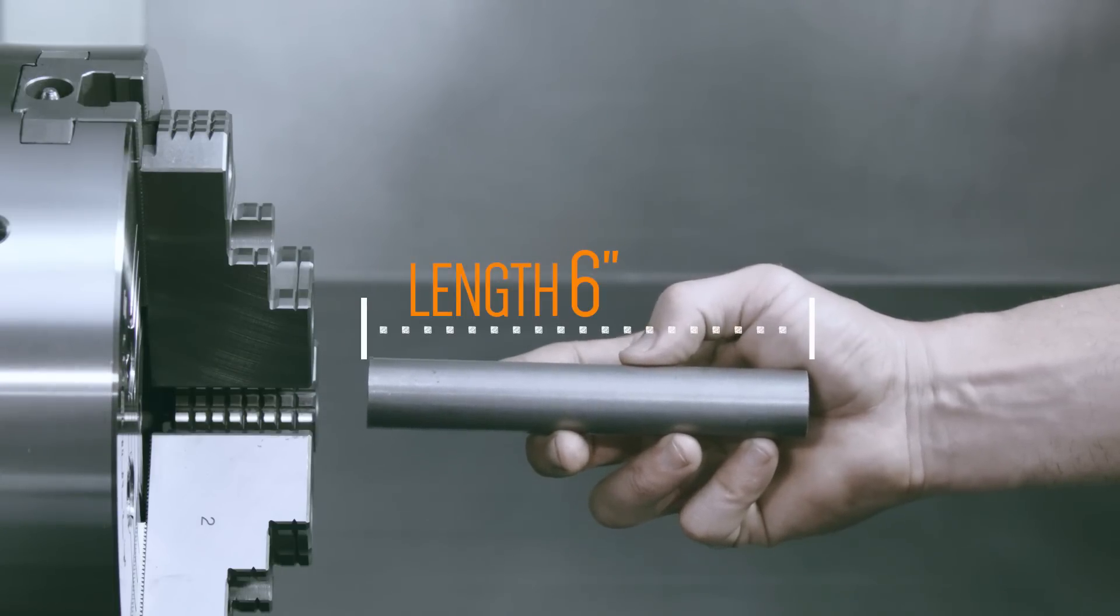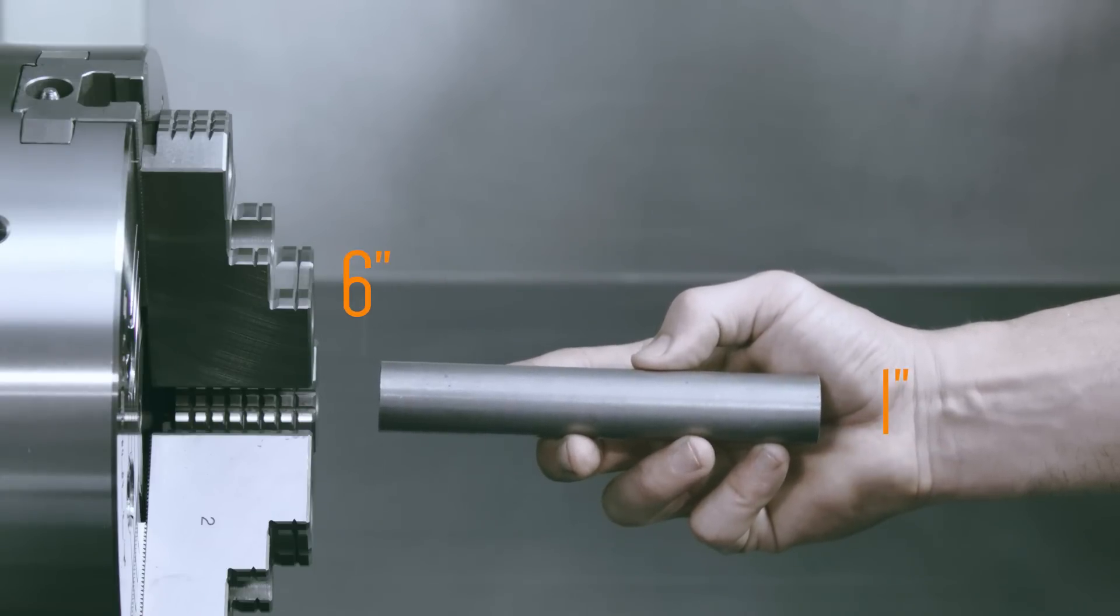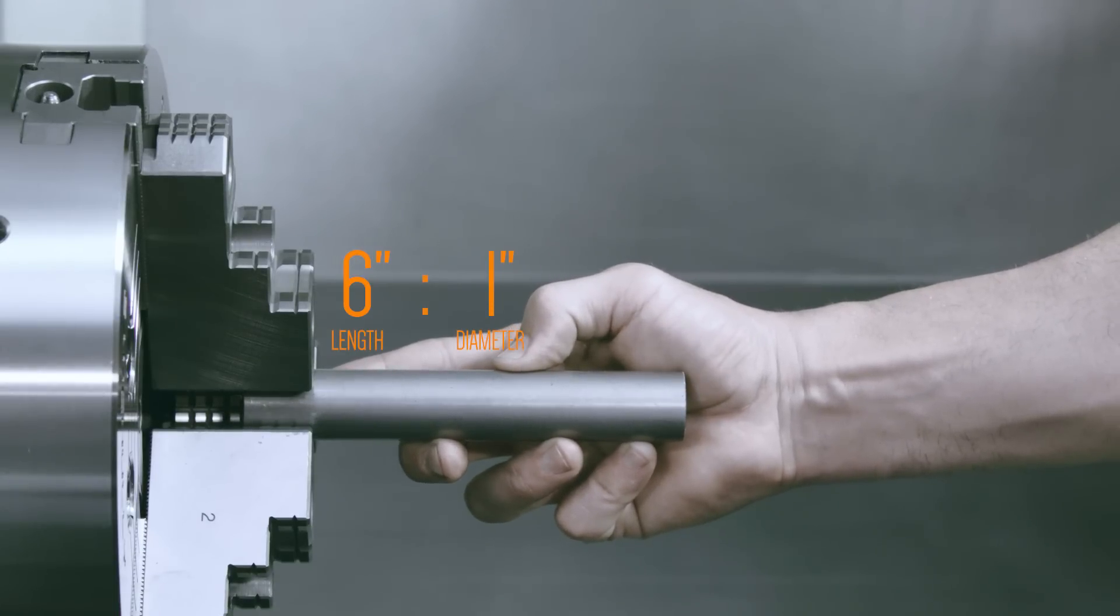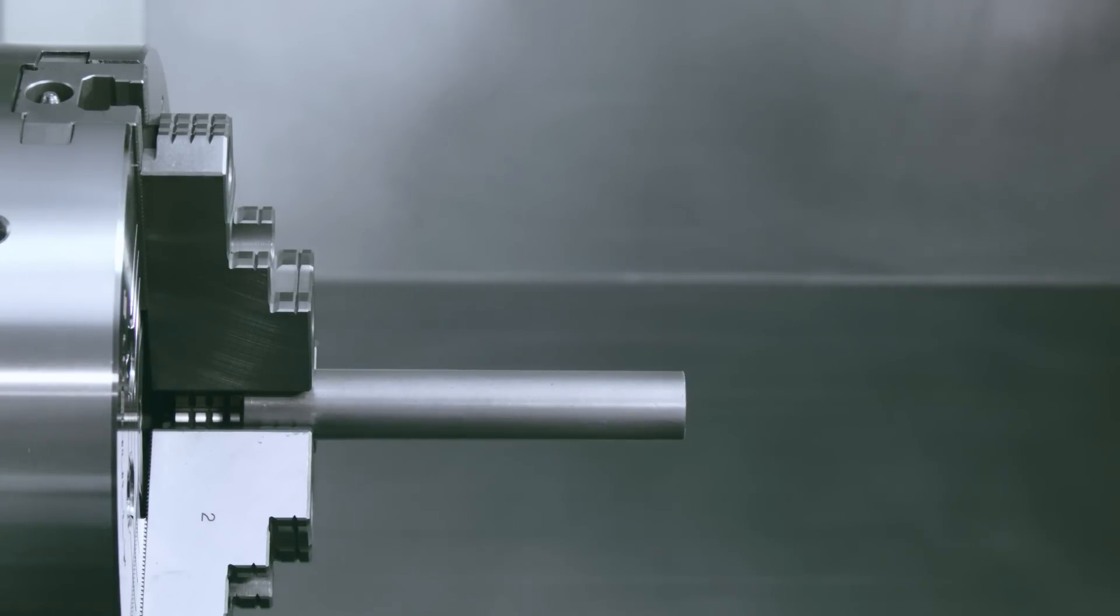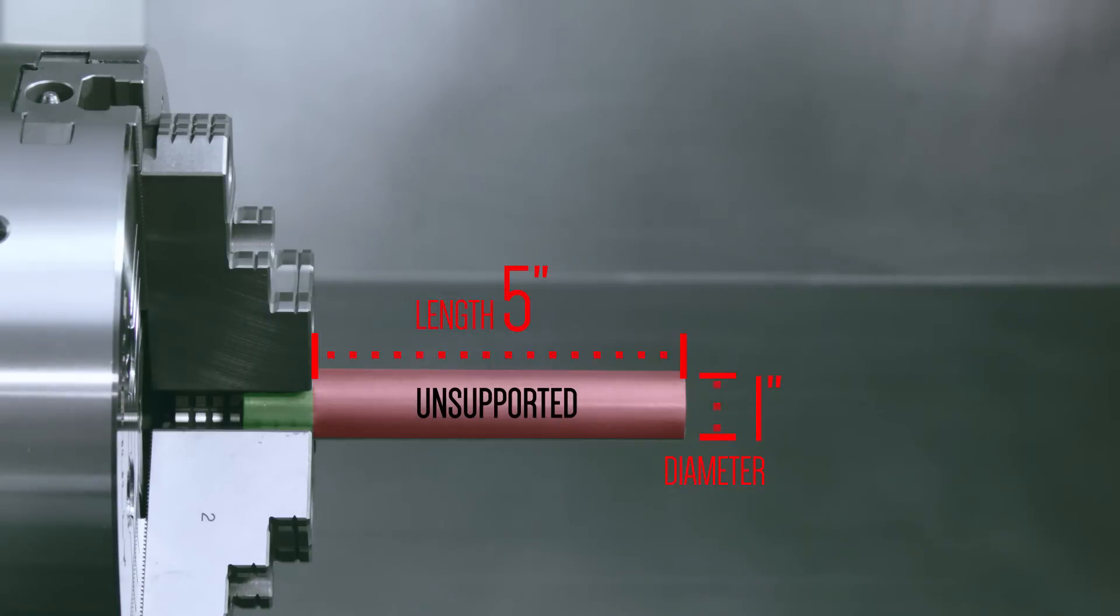Here we have a 6 inch long by 1 inch diameter shaft. Its length to diameter ratio is 6 to 1. Now we clamp this shaft 1 inch deep with 5 inches extending outside the chuck. The unsupported region of the shaft has an L to D of 5 to 1.